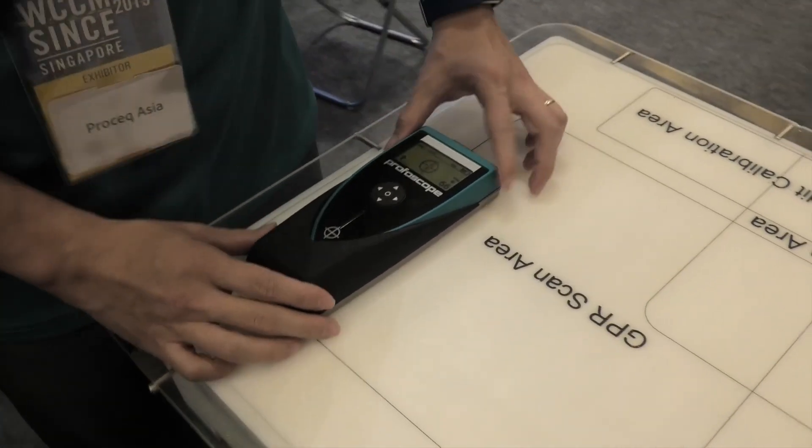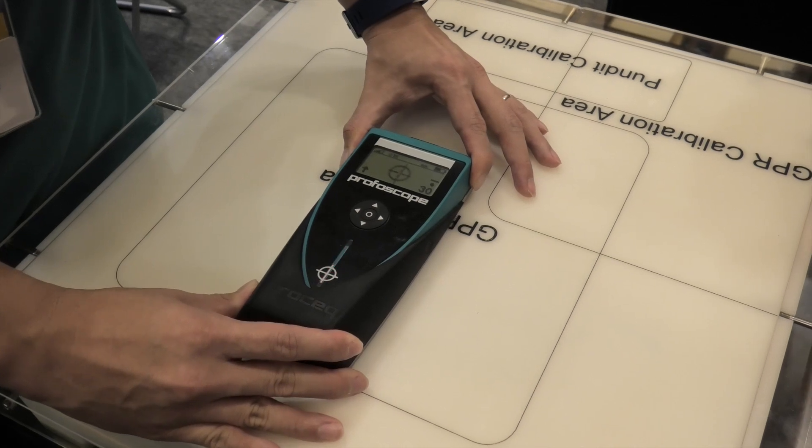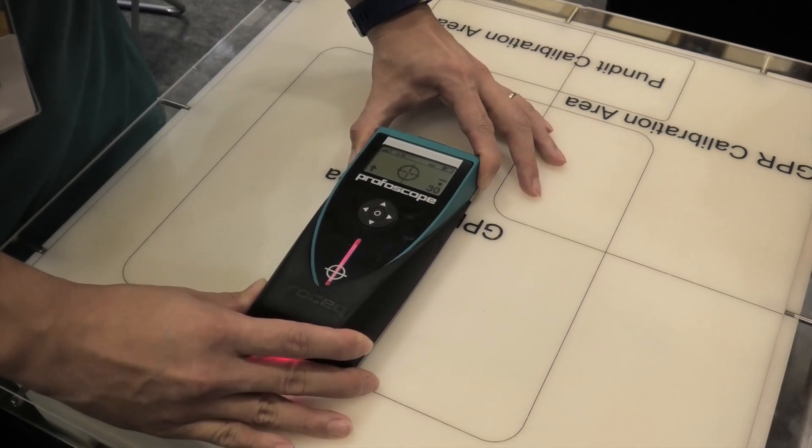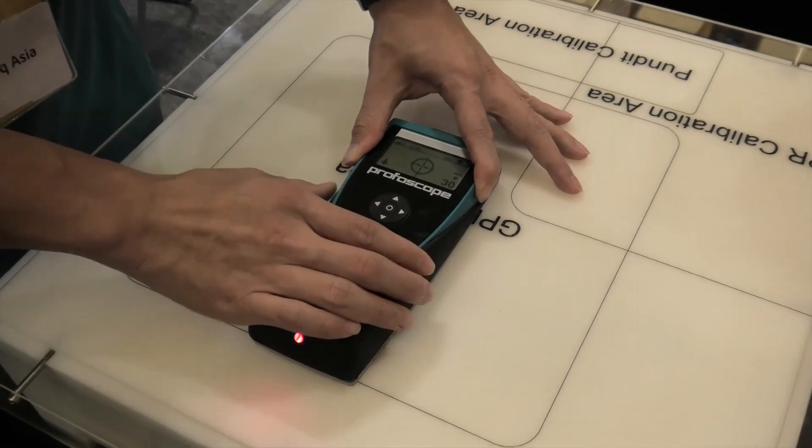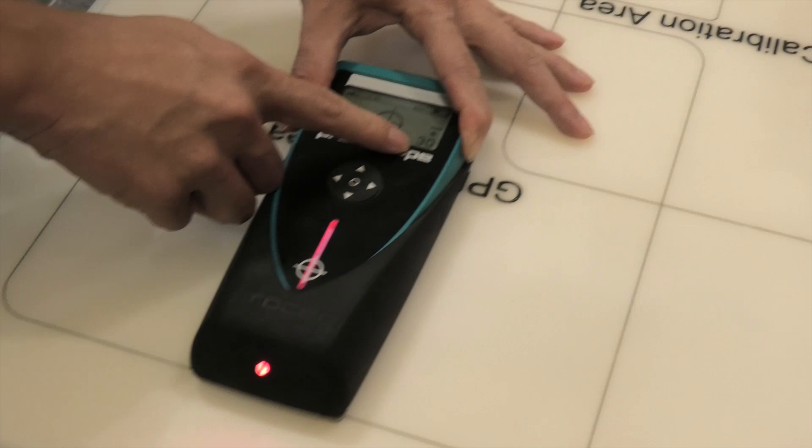So if I put my equipment on the block itself, if I move this along here, once this thing gives you a beep alarm, you can press the button on the side to give you the rebar diameter and this will be the cover depth.